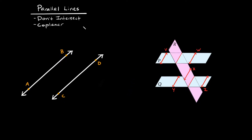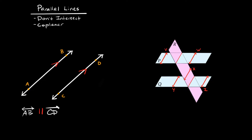Let's start with parallel lines. Parallel lines are lines that don't intersect and they're coplanar — in other words, they're on the same plane. So two lines like line AB and CD are parallel, and you can show that by drawing little directional arrows on them in the same direction. We would write that as line AB is parallel to line CD.